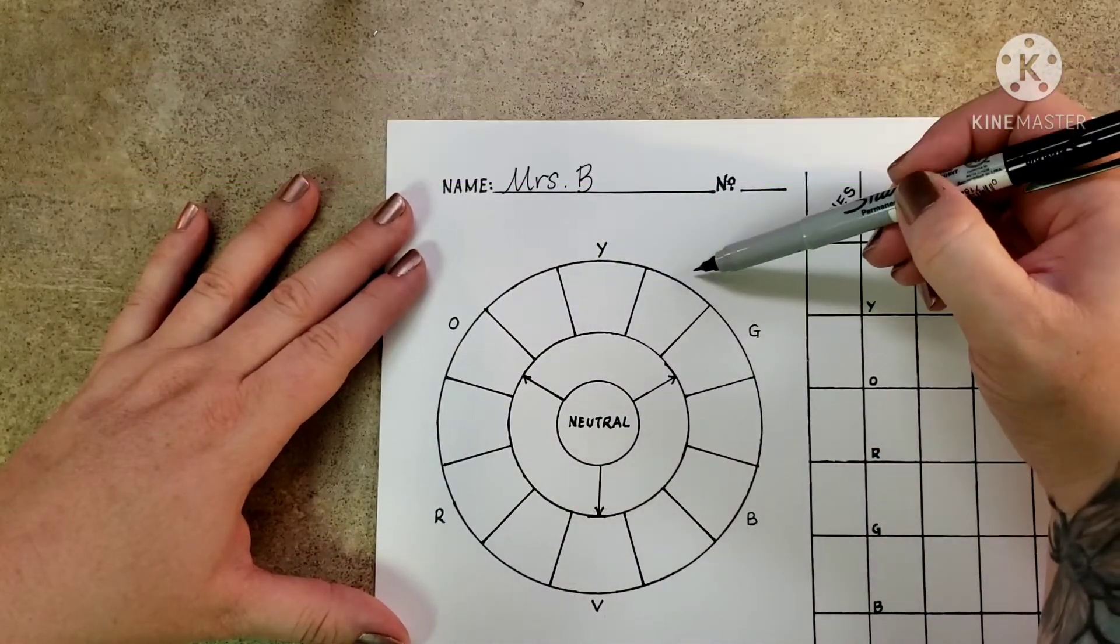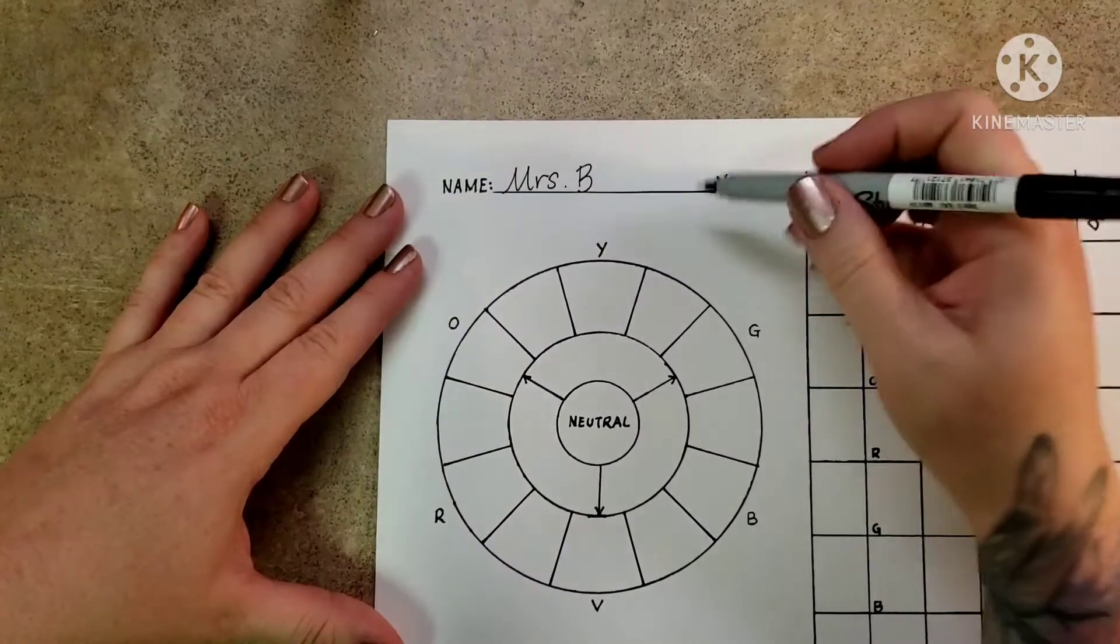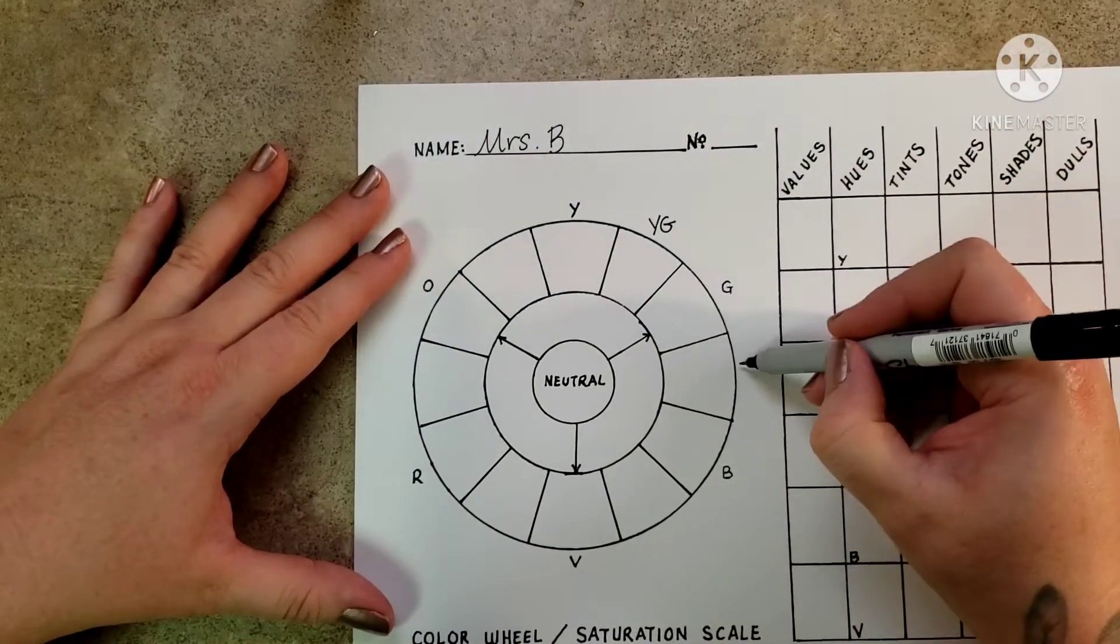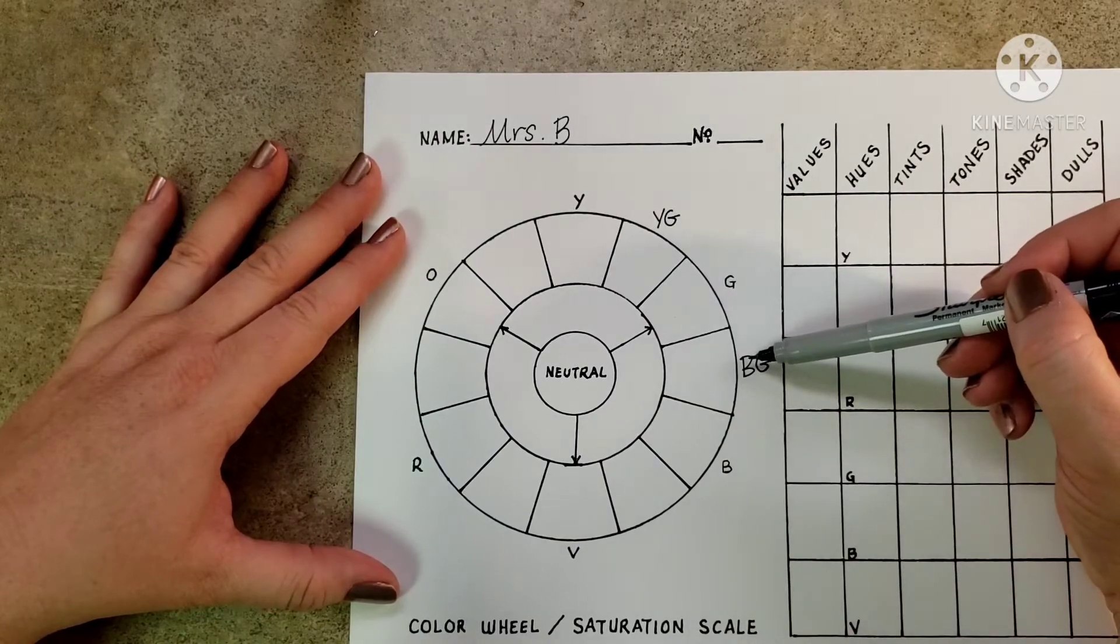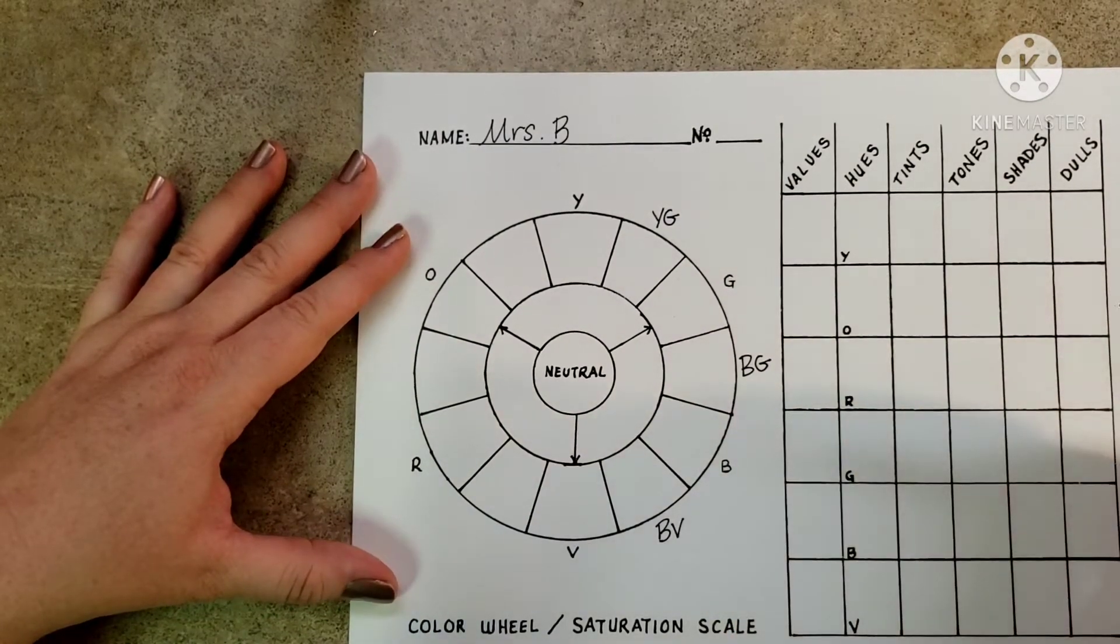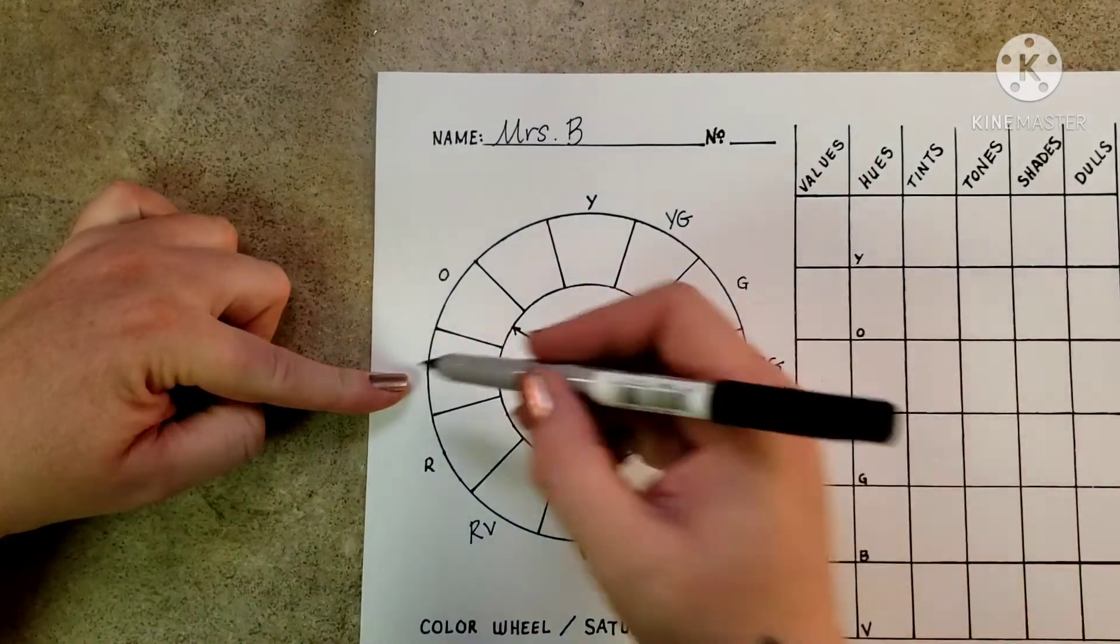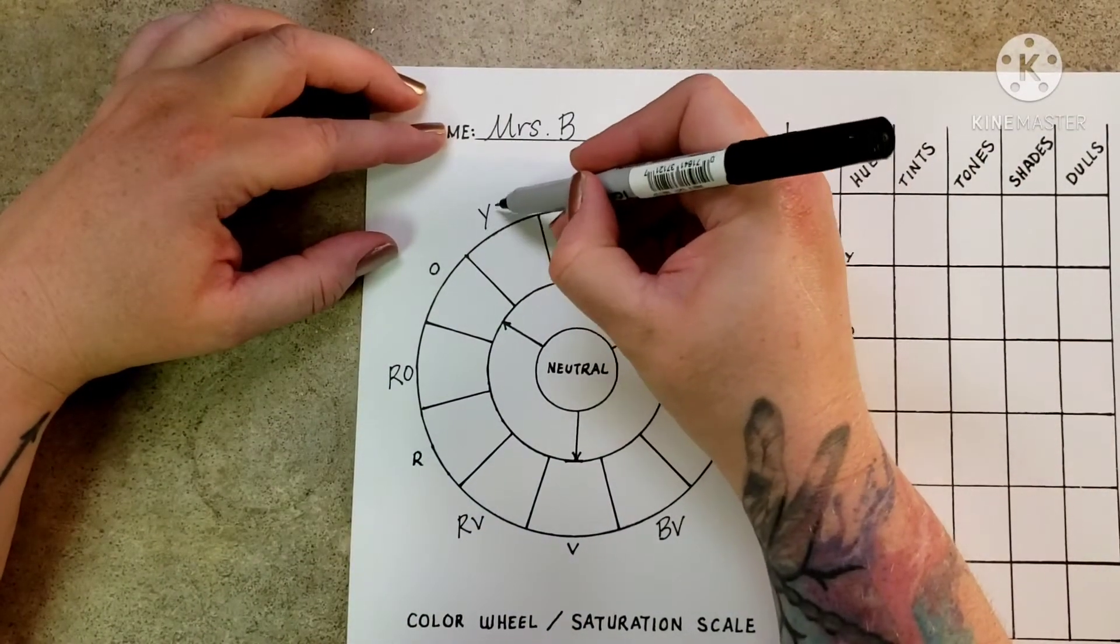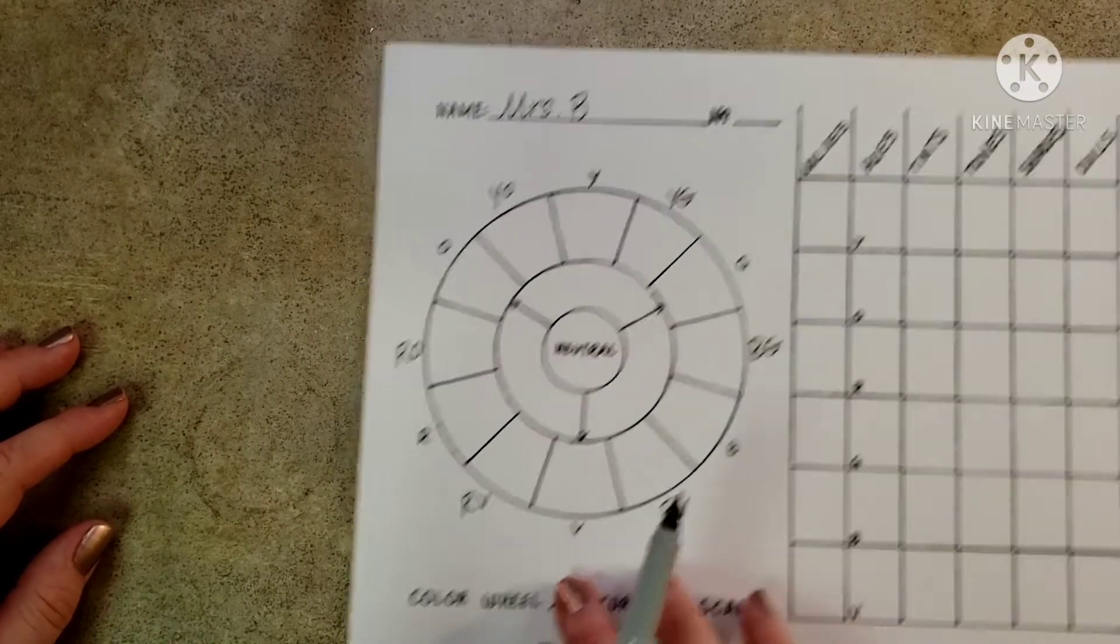To figure out which one goes here you look at both on either side. Yellow green, so we know that right here is yellow green, blue green. We always speak with the primary color first: blue violet, red violet, red orange and yellow orange. The next thing we're going to do is put this aside and take out our paint kit.